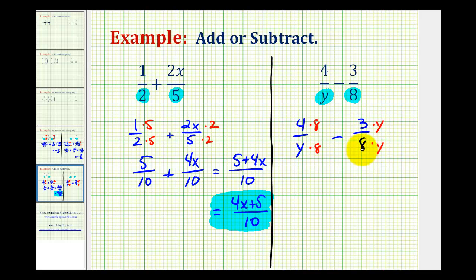Notice how in both cases we have a denominator of 8y. So we'll have 32 all over 8y minus, this will be 3y all over 8y. And now to subtract, the denominator stays the same, which will be 8y. And we subtract the numerators.